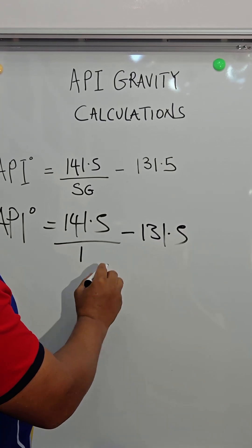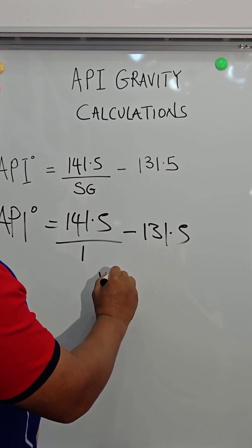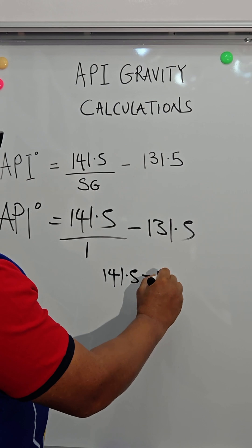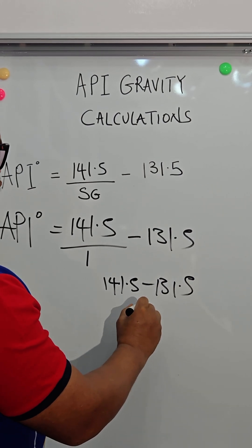So if you do that quickly, you see that you have 141.5 minus 131.5, and that tells you that the API of water is 10.